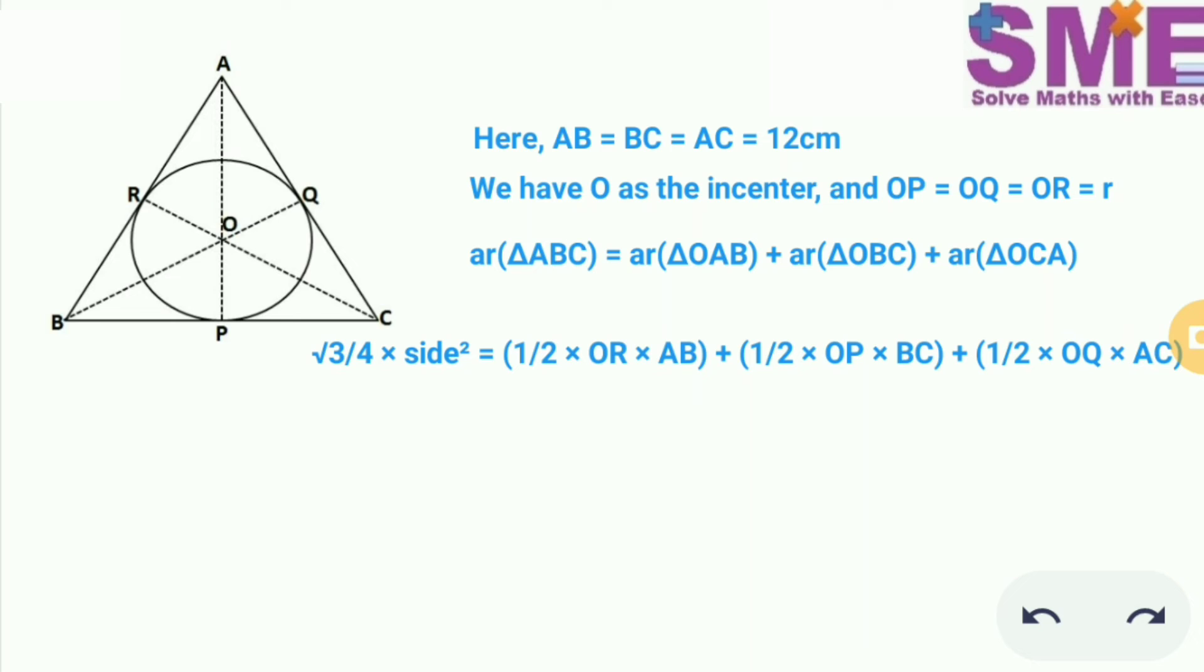For triangle OAB the height will be OR and the base will be AB. For triangle OBC the height will be OP and base will be BC and for triangle OCA the height will be OQ and base will be AC.